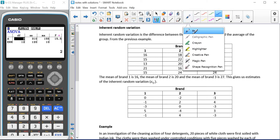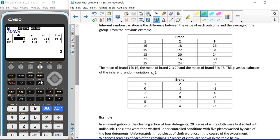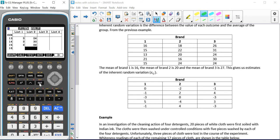Now we're having a look at the inherent random variation. Inherent random variation is the difference between the value of each outcome and the average for that group. If we have a look at our previous example that we used for one factor analysis of variance, we can see that we had this set of values here and we can find the mean of each group.